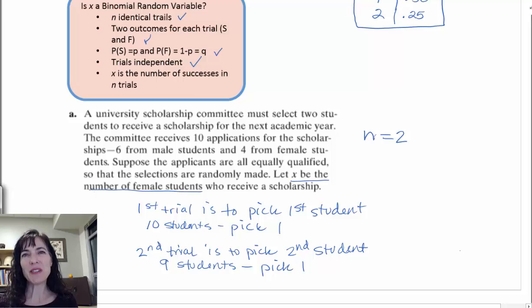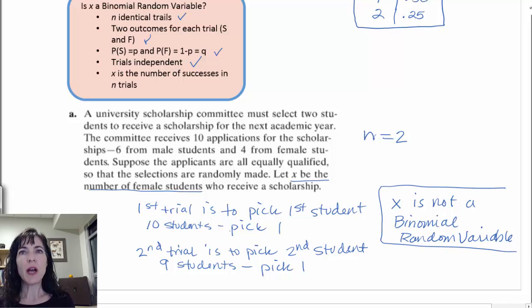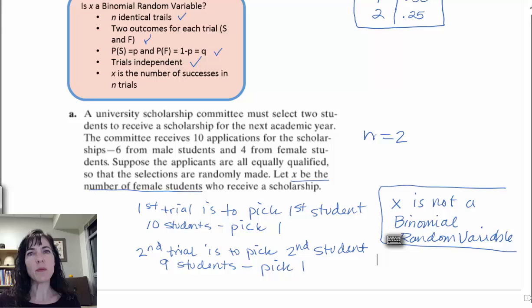So it's not independent, because the results of the first trial influence the results and change the results of the second trial. So I don't have two identical trials, and they're not independent. So X is not a binomial random variable. And those are the reasons that I would give for that, because the first trial and the second trial are not identical, because I will have fewer students to choose from in the second trial. So that's an example where it's not binomial.